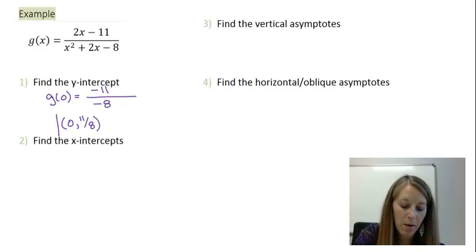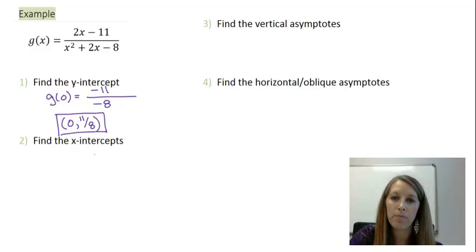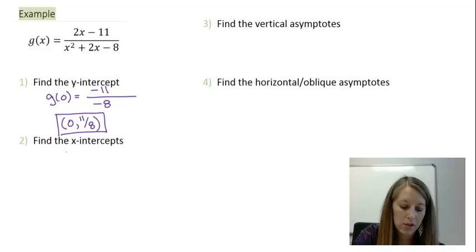My y-intercept in the correct ordered pair format is 0 and 11/8. If you want to come up with a decimal approximation with that or change it to a mixed fraction to figure out where to graph it, that is perfectly understandable. To find the x-intercept, the official way to do it is to set the whole equation equal to 0. But we know that we can cancel the denominator out, so the shorter way to do it is to set the numerator equal to 0.